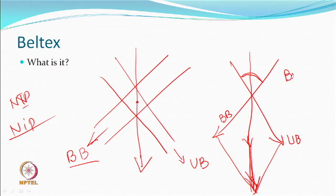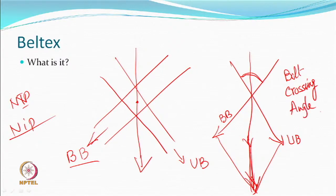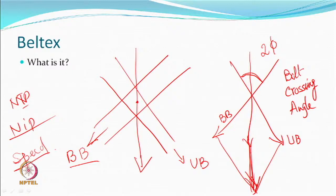The key parameter is the belt crossing angle, let us say 2φ. We can change the speed of the belt — let us say this speed is B1 and this speed is B2 in a generalized system. These speeds can be changed. You would likely keep B1 equal to B2; otherwise, the direction of the frictional force will be different from the direction of the yarn.